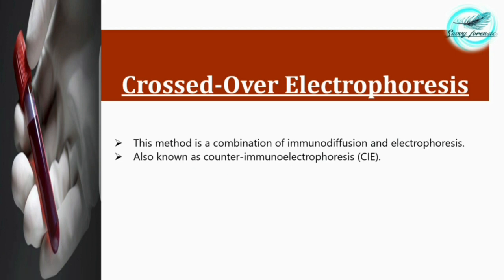Crossed-over electrophoresis is a combination of immunodiffusion and electrophoresis. We have already discussed immunodiffusion. Electrophoresis is the movement of particles in a medium under the influence of an electric field, where they get separated according to their mass-to-charge ratio.